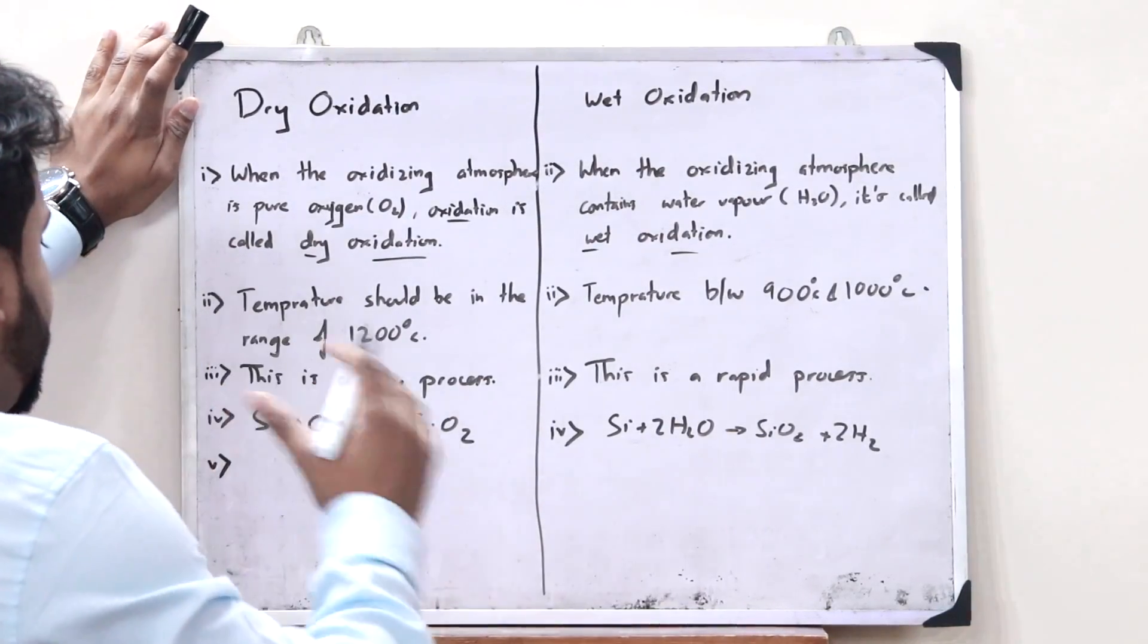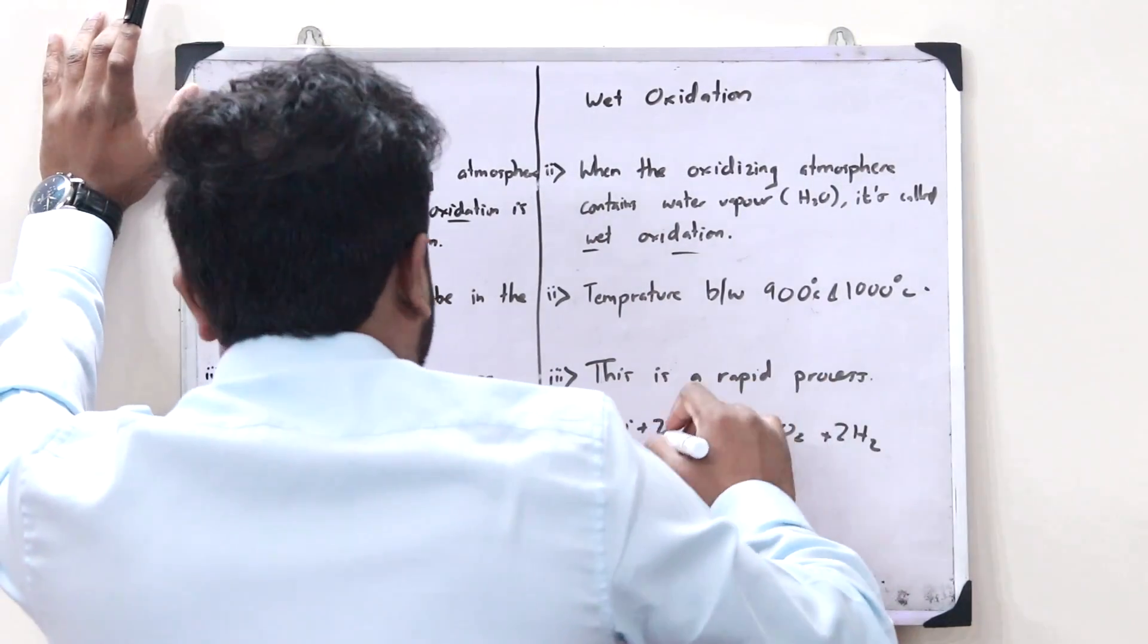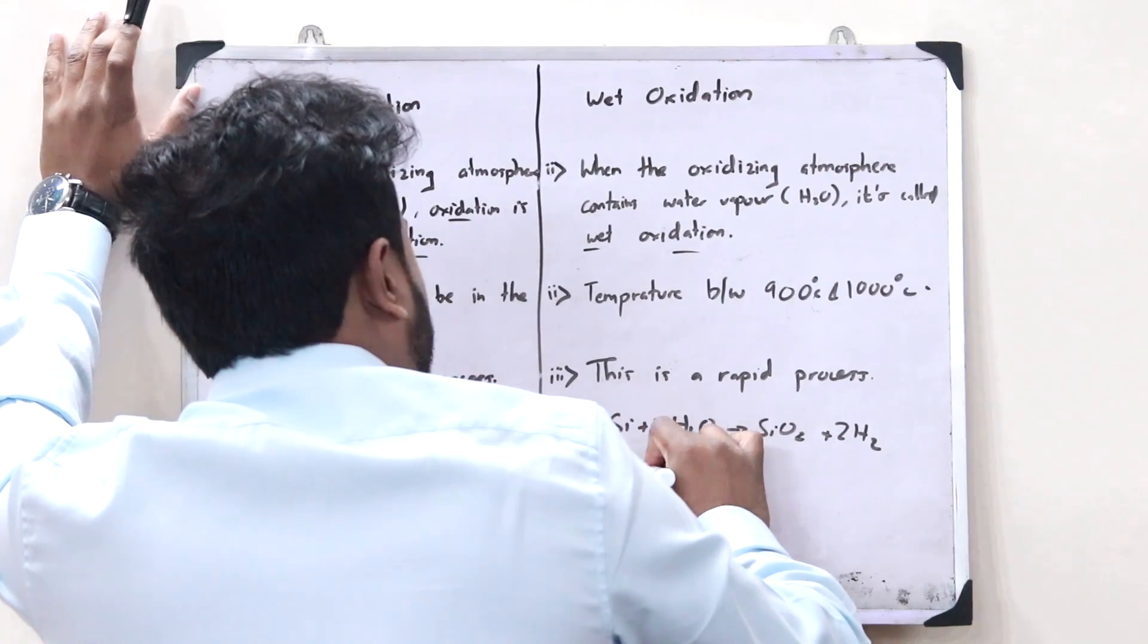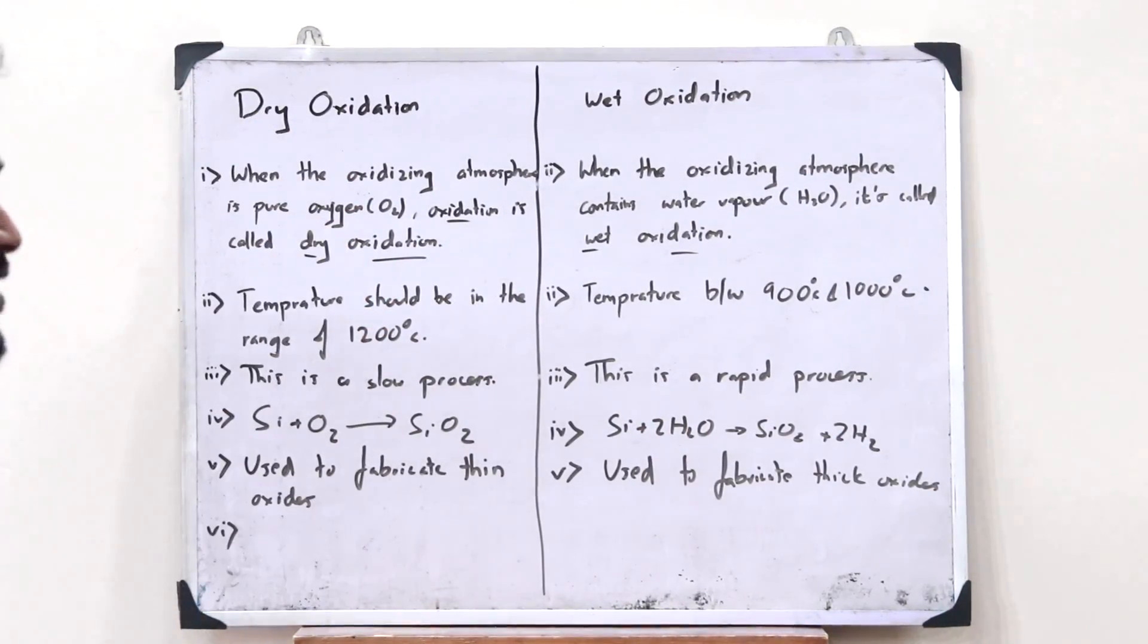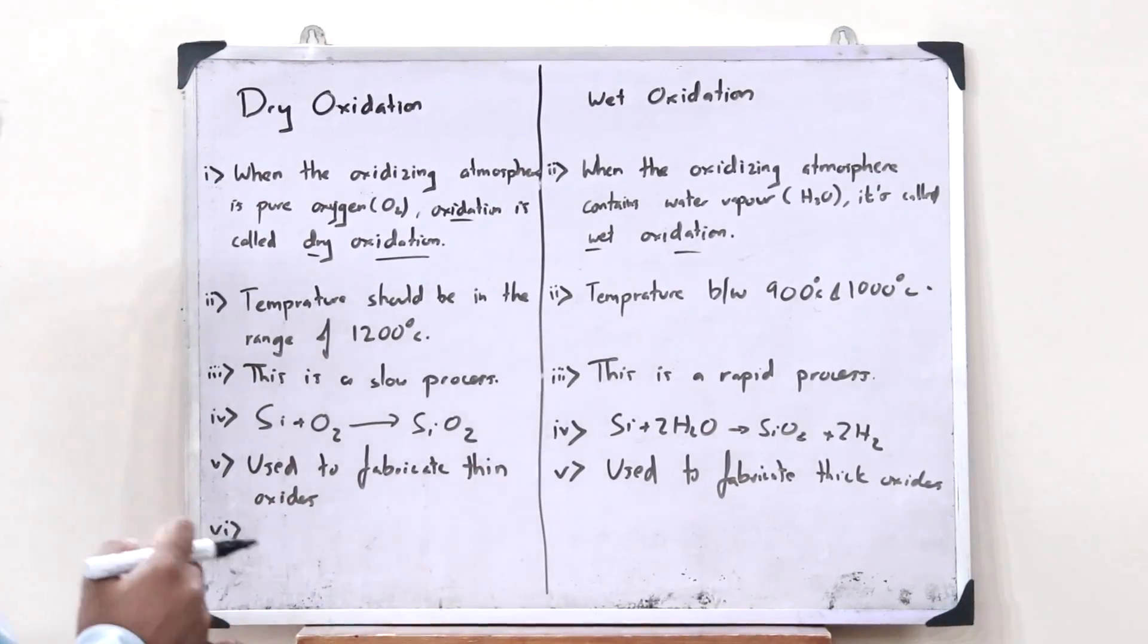Dry oxidation is used to fabricate thin oxides, whereas wet oxidation is used to fabricate thick oxides. The oxides that are grown in dry oxidation have got very good electrical properties.